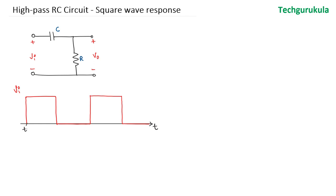Let's assume T is equal to 0, and this is the time period of this periodic square waveform which is T0. This point is T0 by 2, so the duty cycle is 50% and the maximum value of the input is Vm. The pulse width here is T0 by 2. Now, let's assume that the capacitor is completely discharged and has no charge when we are starting at T equal to 0.